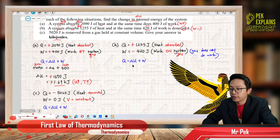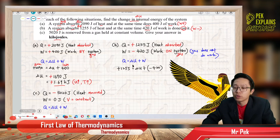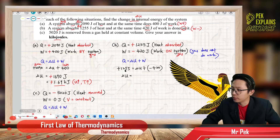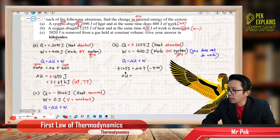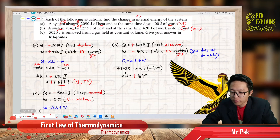Let us find delta U. Q is positive 1255 joule. Delta U equals Q minus W, and W is negative 420. Transferring the negative value to the other side, it becomes positive. So our delta U is positive 1675 joule.